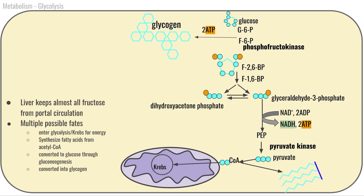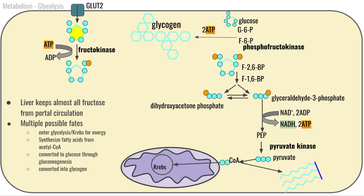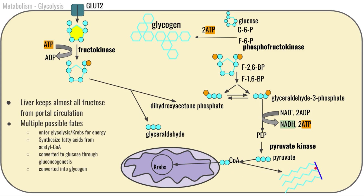Now let's take a closer look at fructose. When fructose is absorbed and trapped in the cell, it can enter glycolysis after the heavily regulated phosphofructokinase step. From there it has several possible pathways: it can complete glycolysis, and that acetyl-CoA can enter the Krebs cycle to generate ATP, or it can go toward lipogenesis to form fatty acids and triglycerides, or fructose can ultimately be converted into glucose through gluconeogenesis.